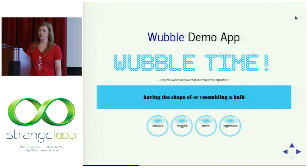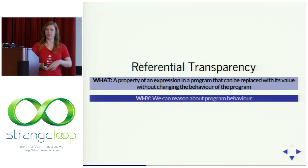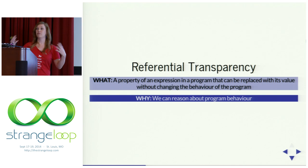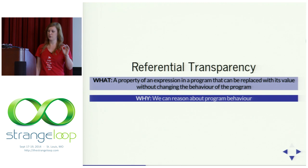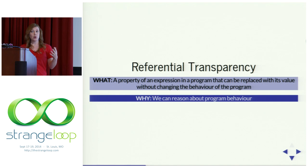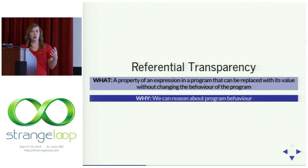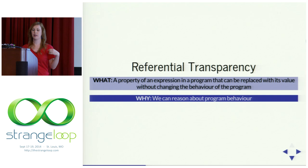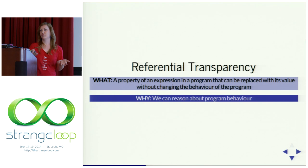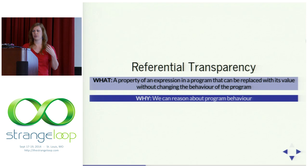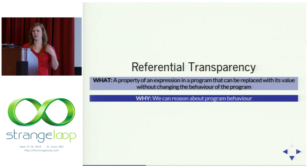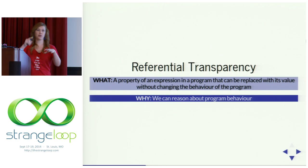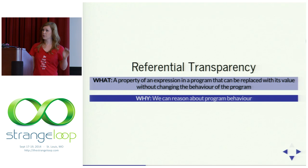The first term I want to talk about is referential transparency. This is a property of expressions in your program that can be replaced with their value or result without changing the overall meaning or behavior of the program in any way. Functional programming values immutable data and using pure mathematical-style functions that simply map inputs to outputs — they don't have any other side effects. When you have functions like this, expressions calling them will be referentially transparent.